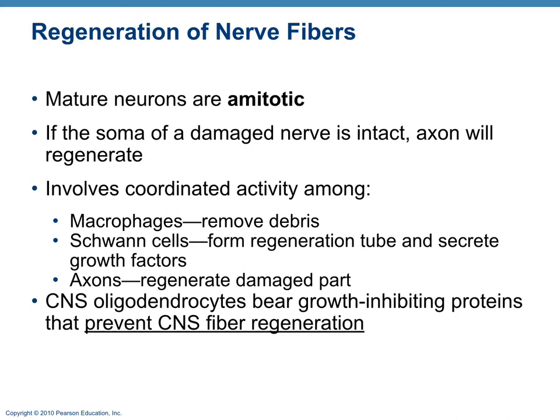In the central nervous system, however, oligodendrocytes — which make the myelin sheath — have growth-inhibiting proteins that prevent CNS fibers from regenerating. In summary, central nervous system fibers do not regenerate, whereas peripheral nervous system fibers do regenerate as long as the cell body remains intact.